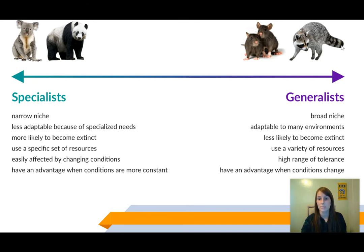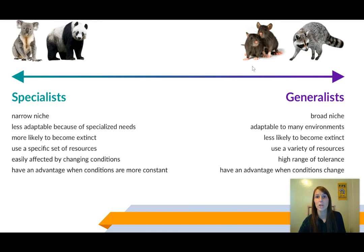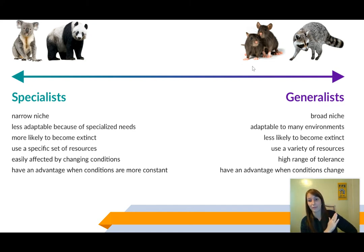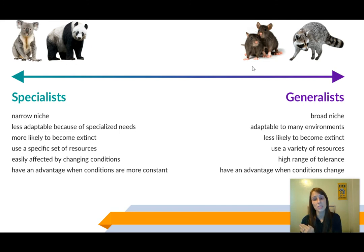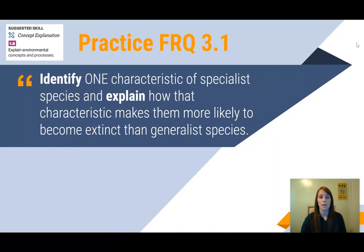Generalist species — like raccoons — also include rats as an example. Just like raccoons, rats can thrive in the forest and also in a house or your backyard, eating pretty much anything. They have a broad niche and are adaptable to many different environments. They are less likely to go extinct because they eat a wide variety of resources and have a high tolerance to changing conditions. Generalist species have the advantage when conditions are changing and not so stable.